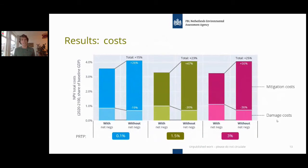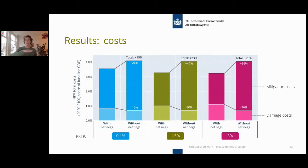Looking more carefully at costs for the medium discount rate: while it makes sense that total costs of avoiding net negative emissions are higher due to the added constraint, in this case total costs are 23% higher in net present value terms. Disaggregating: avoiding negative emissions gives 30% less damages, but 47% more mitigation costs, resulting in 23% higher total costs. This difference becomes larger with higher discount rates.